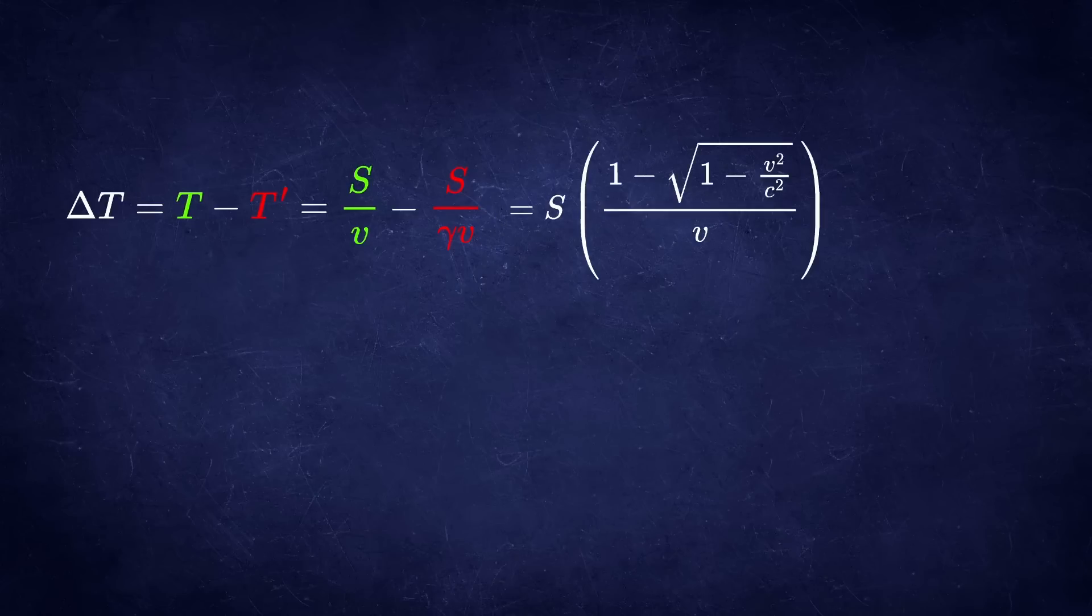If you do the math, you would eventually end up with this expression. Now if you did the limit of velocity goes to 0, you would get 0 over 0, which is also undefined.